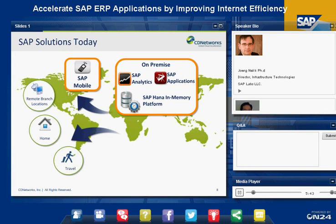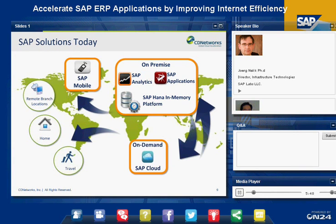The other big trend dominating our industry is, of course, cloud. SAP runs its own cloud with data centers across the world, through which we deliver software-as-a-service applications — or as we call them, on-demand applications — to customers. Those applications are no longer deployed in the customer's data center; rather, customers subscribe to them and they are delivered by SAP on behalf of our customers to the end users.